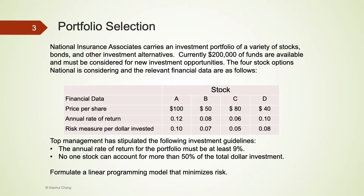Please stop the video and see if you can formulate a linear programming model for this example. What are the decision variables, objective function, and constraints? I have provided some hints by underlining some of the information. Are you able to complete step 1: define the decision variables, state the objective, and state the constraints?